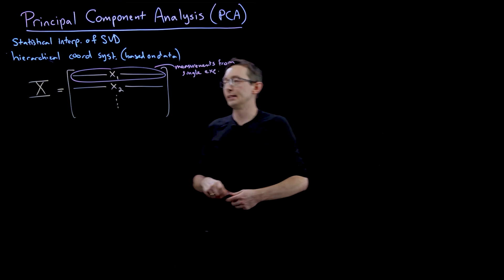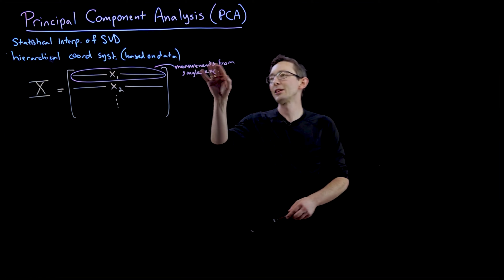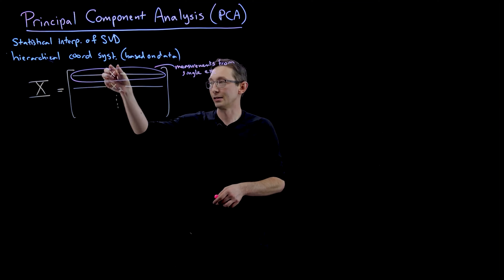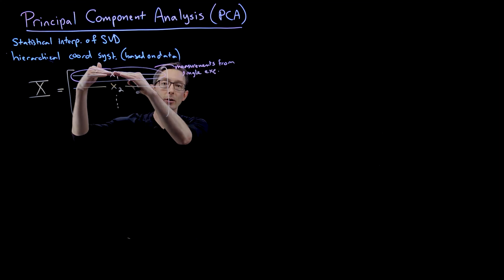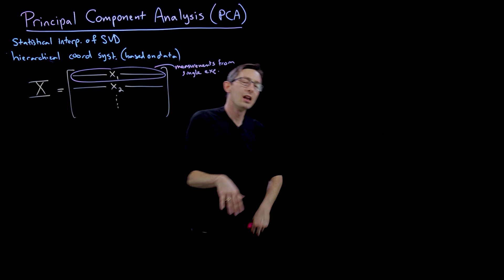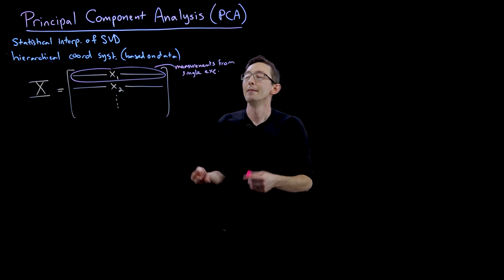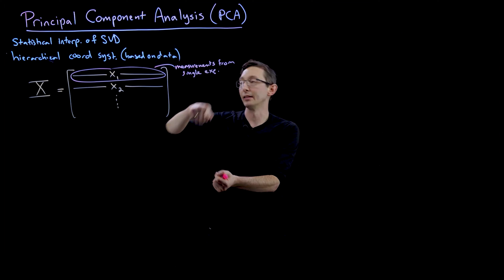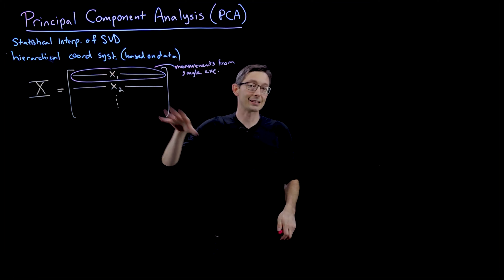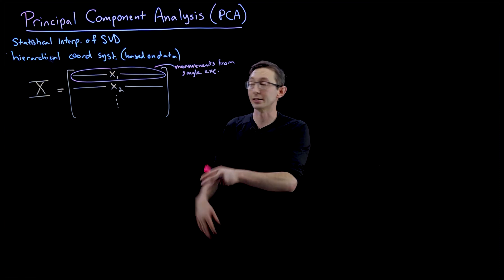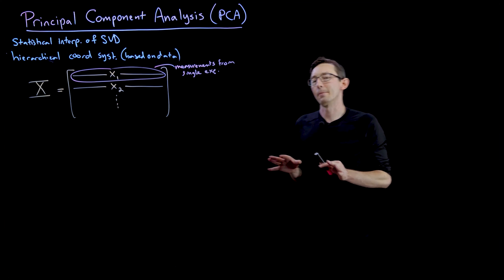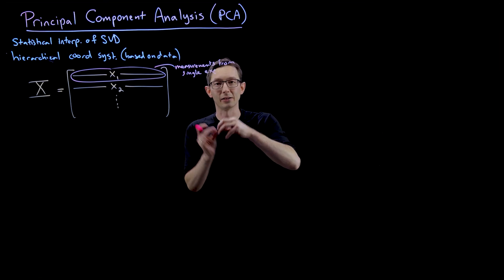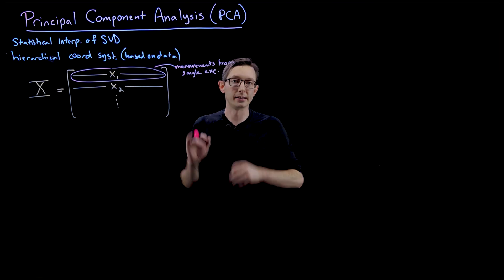For example, this measurement might be demographic information from a specific human — age, weight, sex, race, etc. — and x1 would be person one, x2 person two, and so on. This is the same basic idea as before with our data matrix X, except now instead of columns holding the information for a specific individual, we're going to have those be rows, which is consistent with the PCA literature.